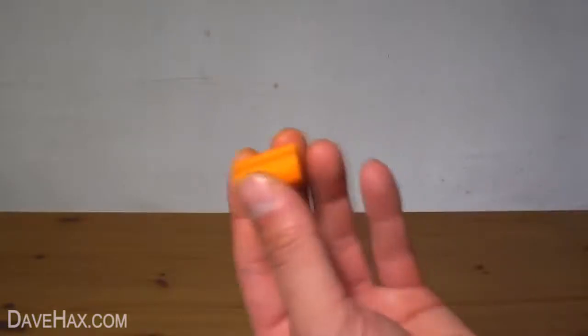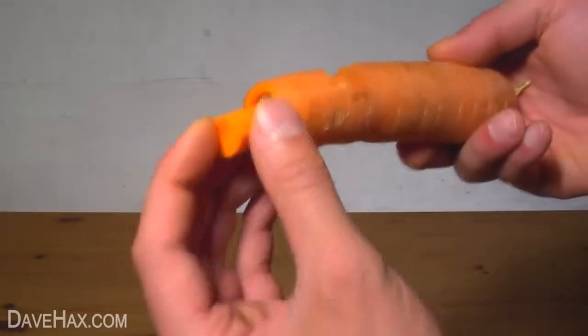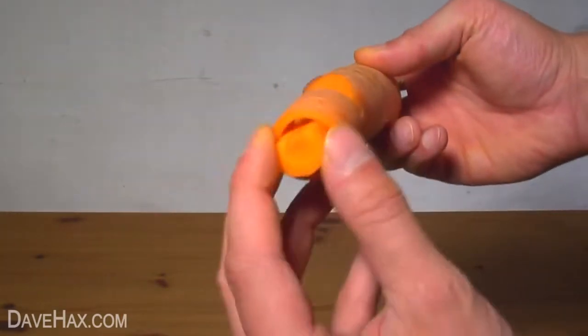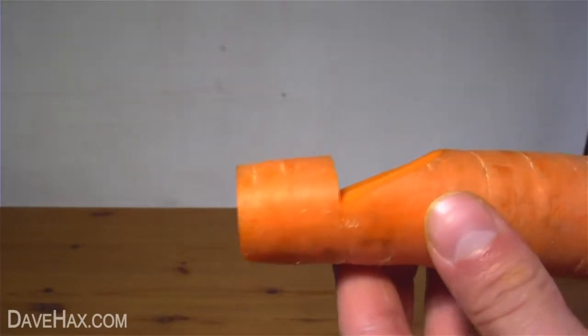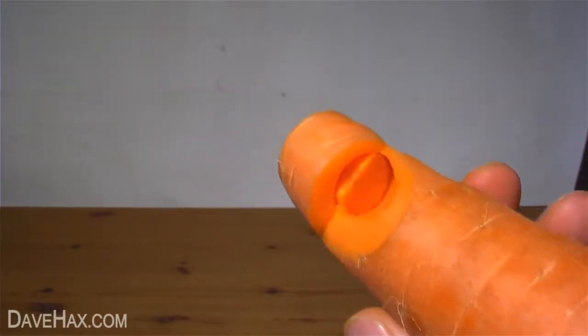Next cut a small flat at the edge of the plug and slide it into the mouthpiece so the flat lines up with the whistle cut, like this. We should now get a whistle.